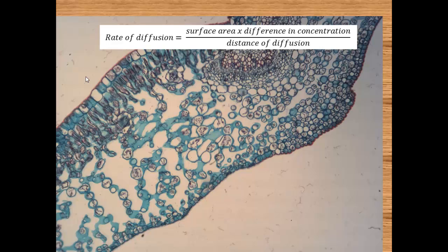When thinking about adaptations, consider Fick's Law, which describes the rate of diffusion and the factors that affect it. At the top of the equation you have surface area times difference in concentration — a larger surface area means faster diffusion, and a higher concentration difference also speeds diffusion up. What makes diffusion slower is a long distance, so if the diffusion distance is high, diffusion will be slower.